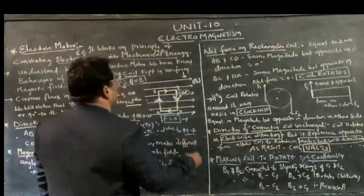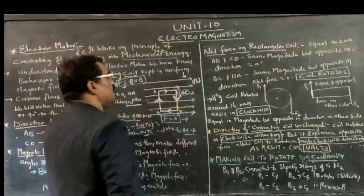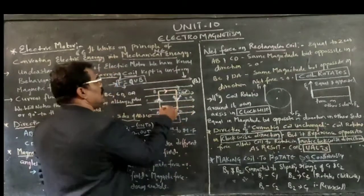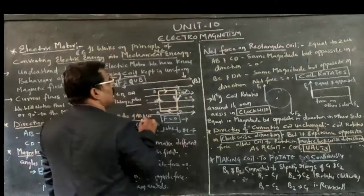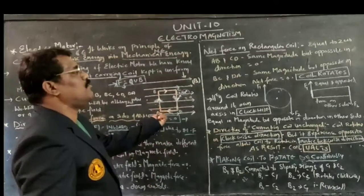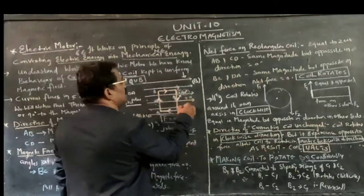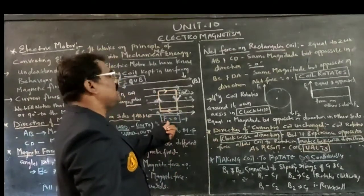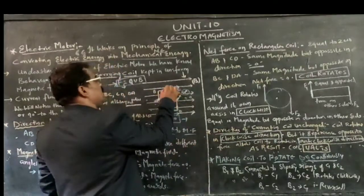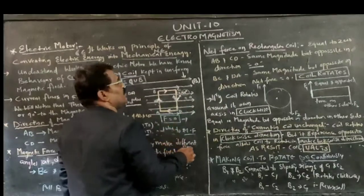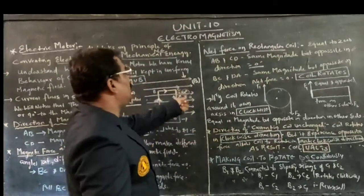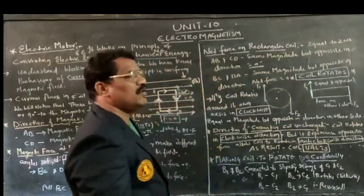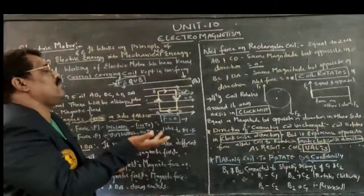The net force on the rectangular coil will be equal to zero — because AB and CD have the same magnetic force but in opposite directions, so AB plus CD equals zero. Similarly BC plus DA equals zero. Even though the net force is zero, the coil still rotates around its own axis.